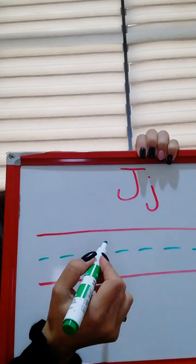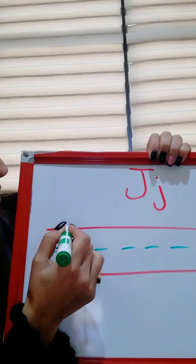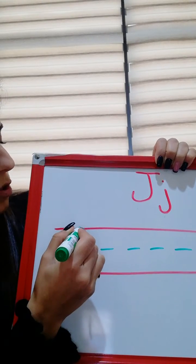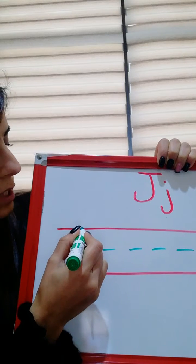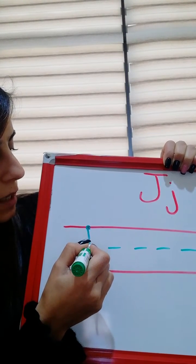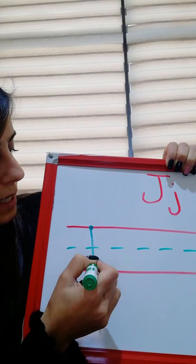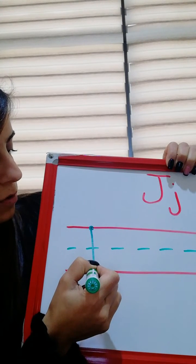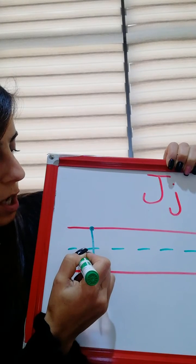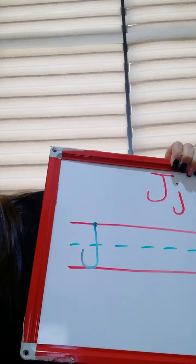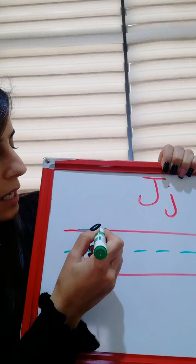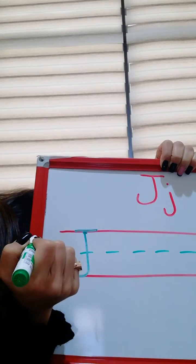Okay, so we are going to start with uppercase J. Here on the dot, you start at the dot, you go down, straight down, so you make a vertical line, then you turn, you make a turn or a curve, and then you go back to the top, and you go across, you make a small horizontal line.